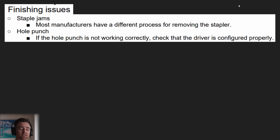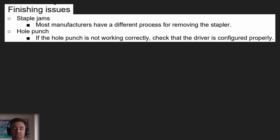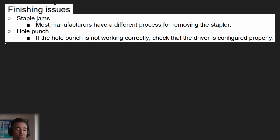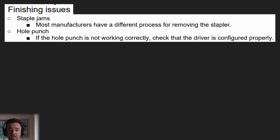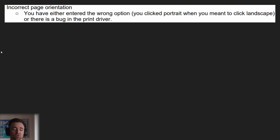If you have finishing issues such as staple jams or hole punch issues — for staple jams, most manufacturers have different processes for removing the jam, so it's pretty much as simple as following manufacturer instructions. For the hole punch, if it's not working correctly, make sure the driver is configured properly, and again check manufacturer instructions. These don't require too much specific knowledge; you'll mostly want to focus on issues like ghost images and lines down the page, which relate to specific printer components.